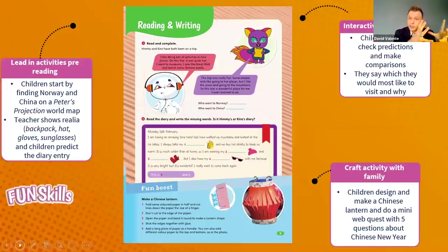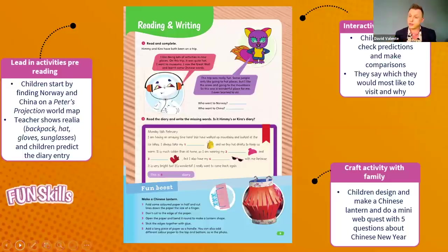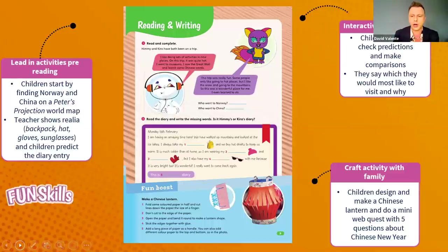We've used our objects and our Peters Projection map to help children predict, and then they can read and check their predictions. Linked to this, there's a creative hands-on family task connected to topics — for China, making a Chinese lantern. Then, making the most of the support families can offer, a mini web quest with five questions all about the Chinese New Year festival to bring in intercultural learning: when does it happen, what foods do people eat, and so on? In the next class, they present what they found out.